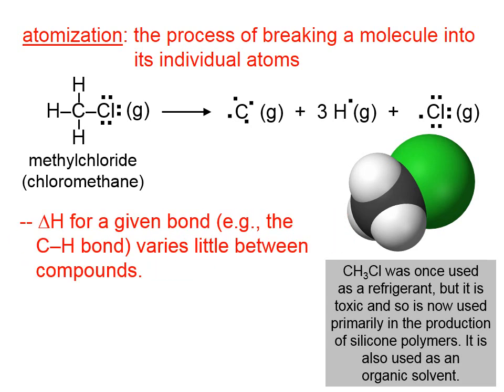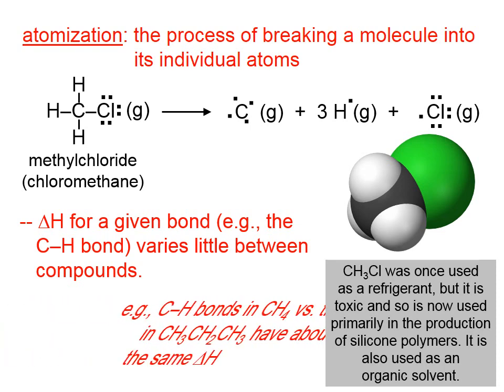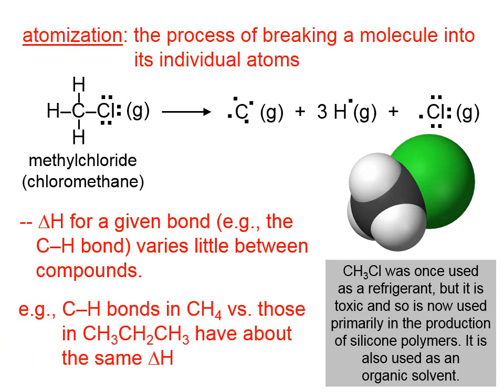The bond enthalpy for a given bond, let's say the carbon-hydrogen bond, varies little between compounds. For example, the carbon-hydrogen bonds in methane compared to those in propane — a carbon-hydrogen bond has about the same bond enthalpy regardless of what compound that carbon-hydrogen bond is in.